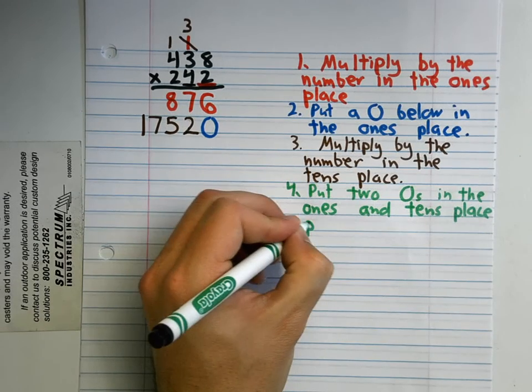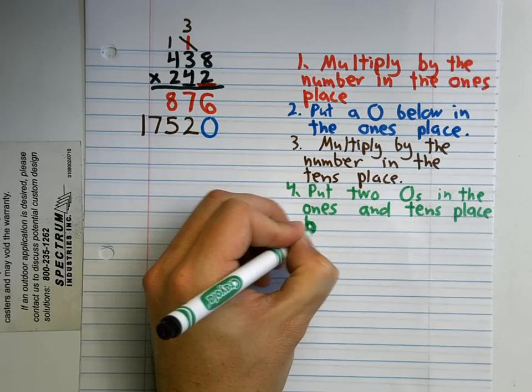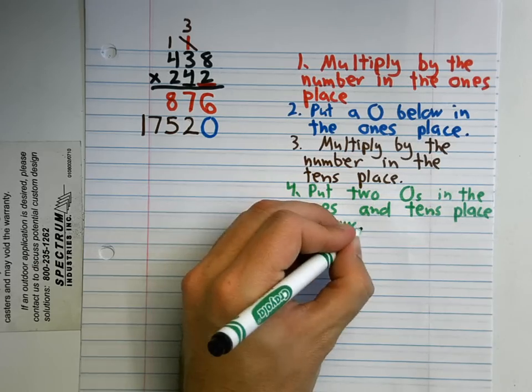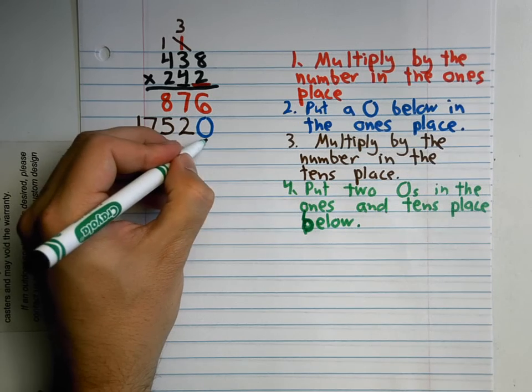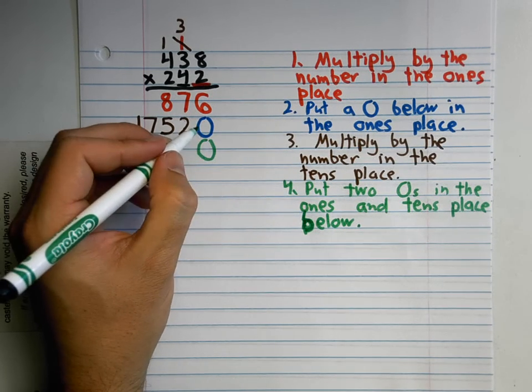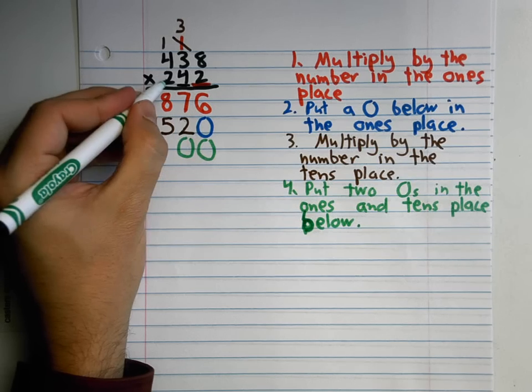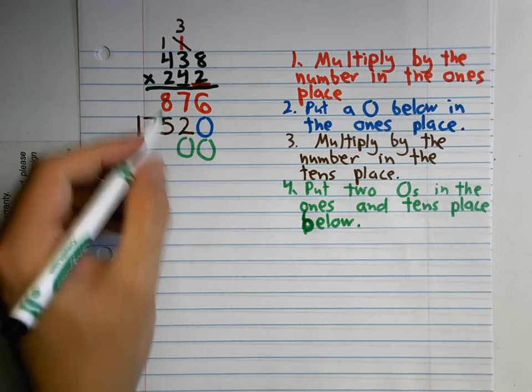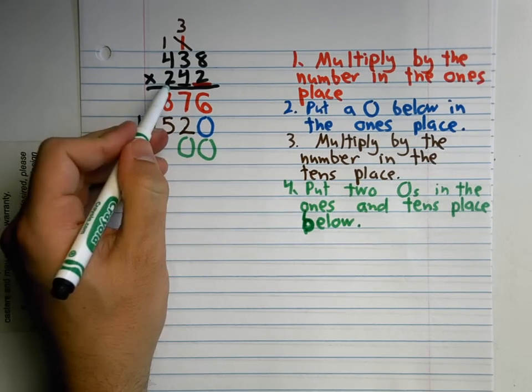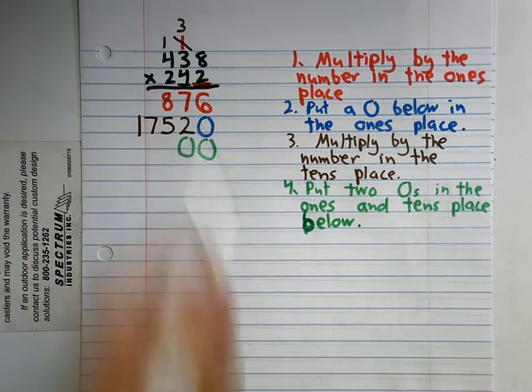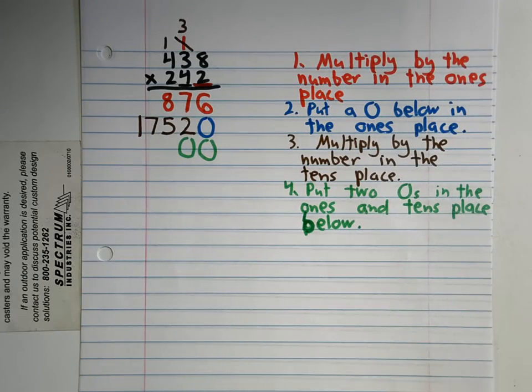Put two zeros in the ones and tens place below. And what that means is I have to put one right here and one right here, because now I'm multiplying by hundreds next. I don't want to start putting numbers in my ones and tens because I'm multiplying by hundreds. This zero going in the ones and tens place holds the place so I know they're all going to be lined up in the end.